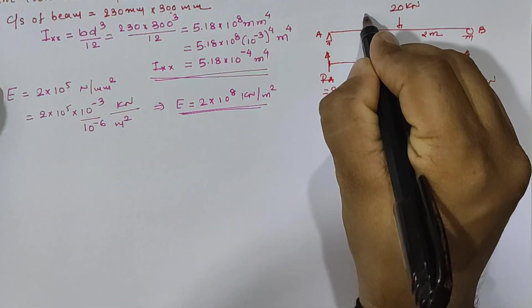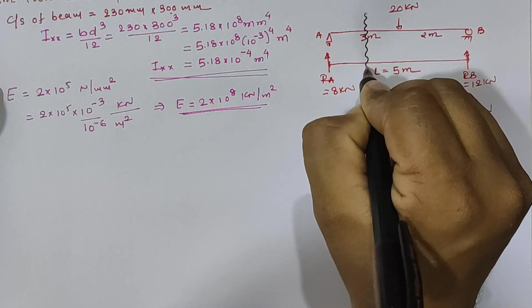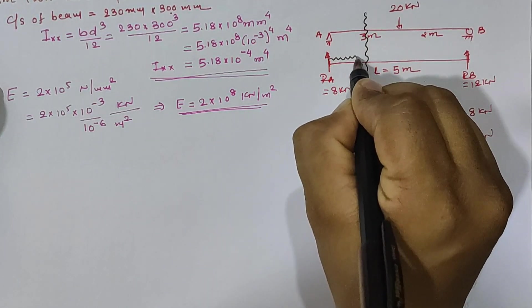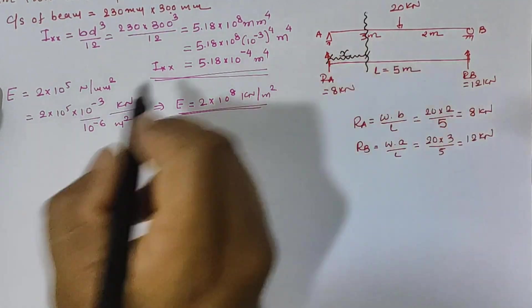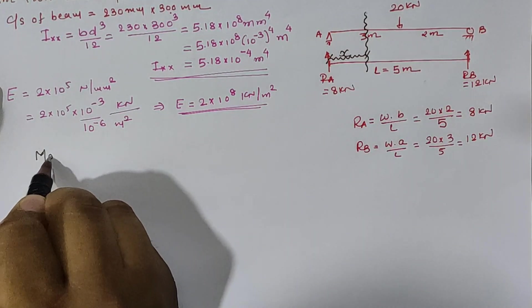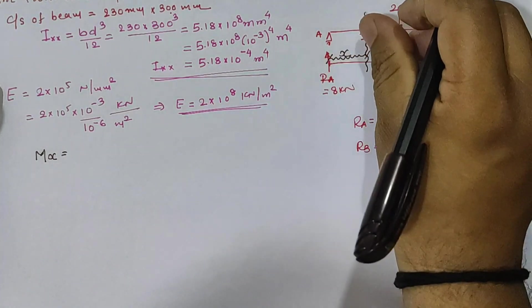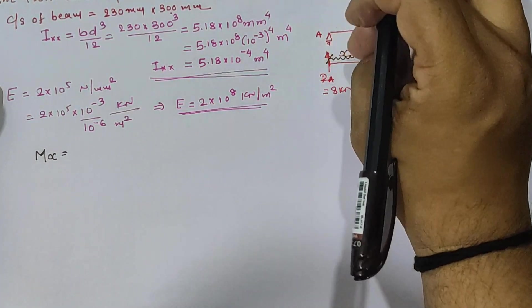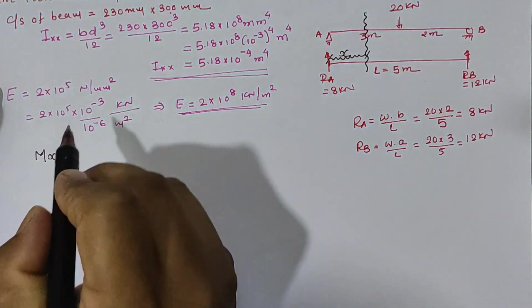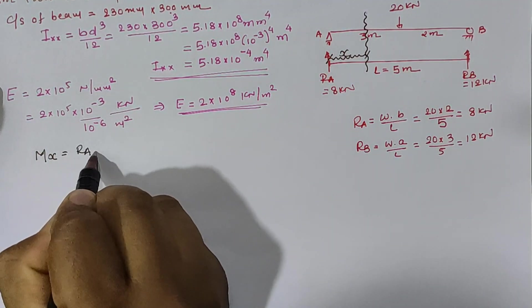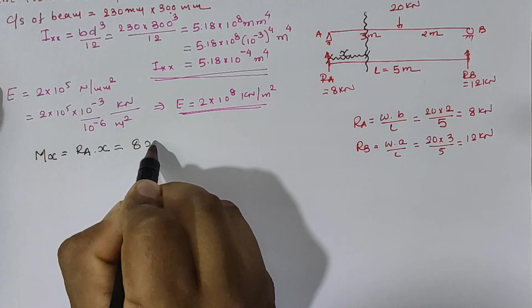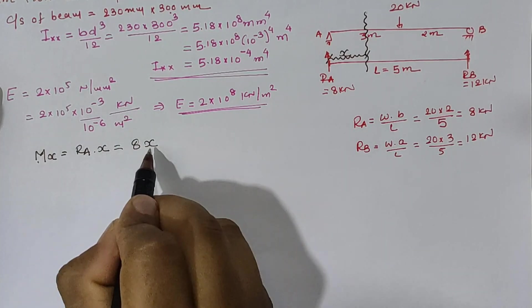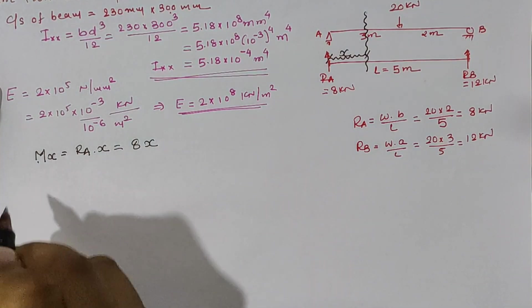First, if we assume a section at distance x from support A then moment at x can be written as Ra into x in clockwise direction which is equal to Ra into x and Ra value is 8. Hence, our moment at x is equal to 8 into x.